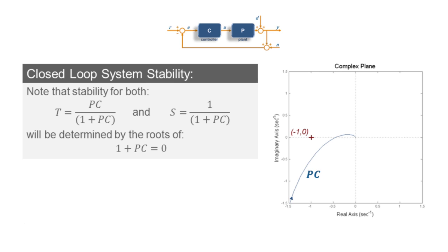Notice that if the trace of PC were to pass through the minus 1 comma 0 point, then at that point, for that excitation frequency, the denominator of our closed-loop transfer function will become 0, which means that both T and S will go to infinity, and obviously our system will blow up, which as you might guess would be really bad.